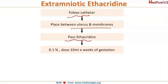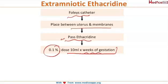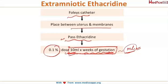Through this catheter we pass ethacredine into the space in a concentration of 0.1%, and the dose of this ethacredine is calculated as per the gestational age — that is 10 multiplied by the weeks of gestation gives us the amount of ethacredine in ml to be given for MTP.